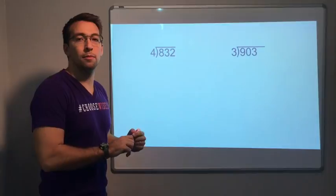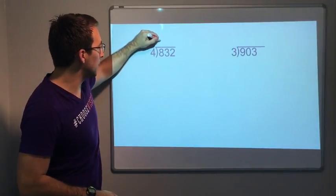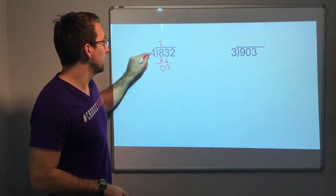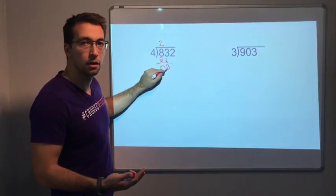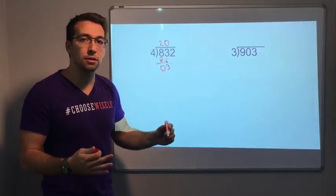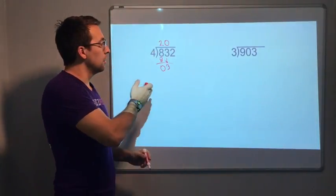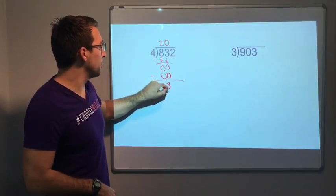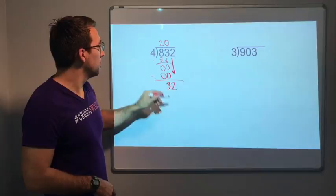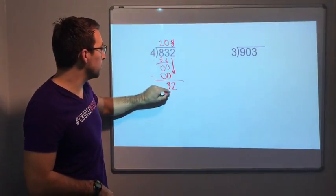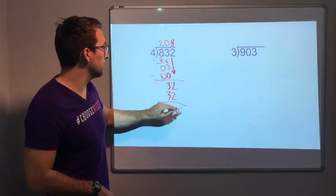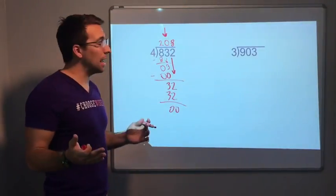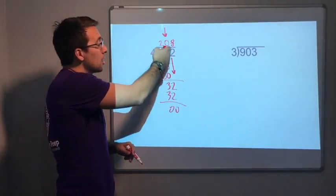Let's look at these basic problems with one-digit divisors. Four goes into eight two times. Two times four is eight, so that's zero. Bring down our three. Four does not go into three, so we have to have a zero. That is what it means when we have a zero in the quotient. Zero times four is zero. Three minus zero is zero. Bring down our two. Four times eight is thirty-two. Zero remainder. This is a zero in the quotient — we do that when our divisor does not go into the dividend.